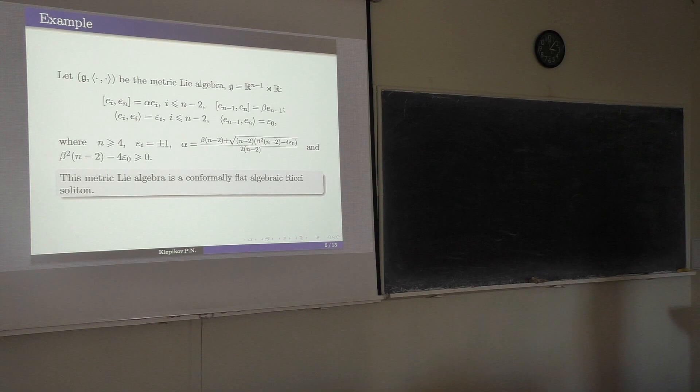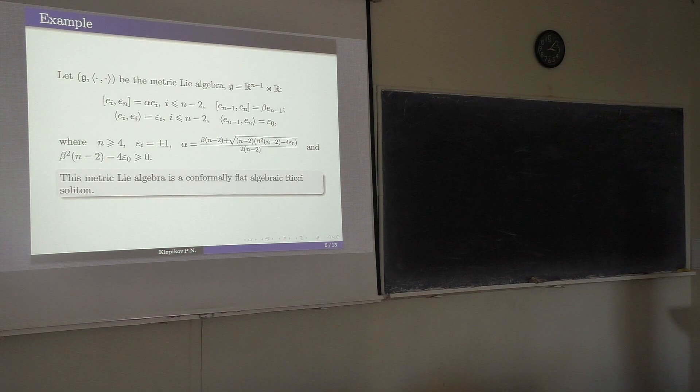The parameter alpha can be expressed through beta, and beta must be chosen such that this inequality holds. This scalar product is isotropic, so it is pseudo-Riemannian, not Riemannian. This metric Lie algebra is a non-trivial, conformally flat algebraic Ricci soliton.